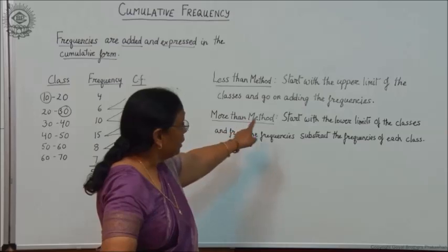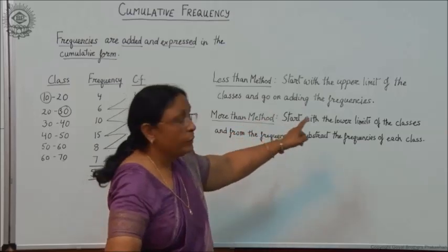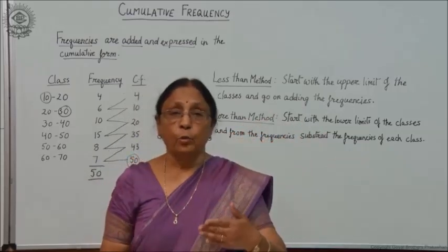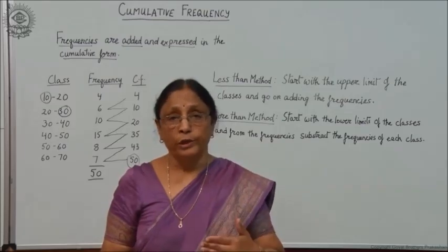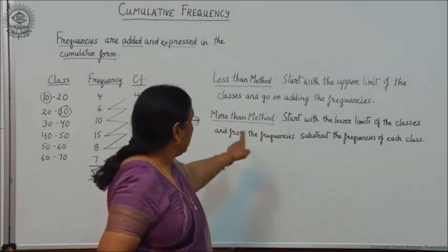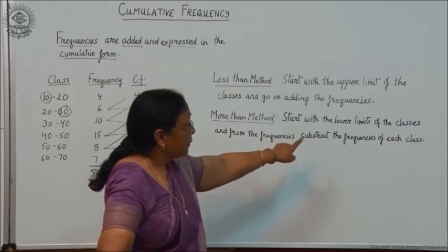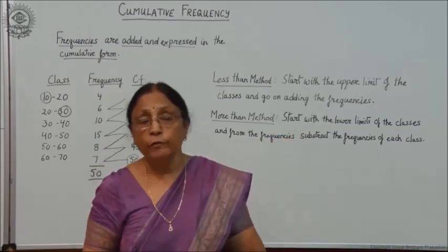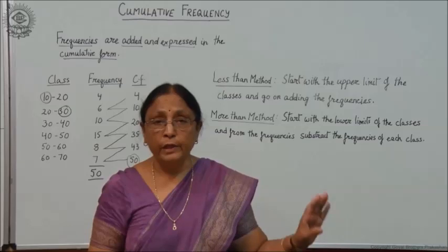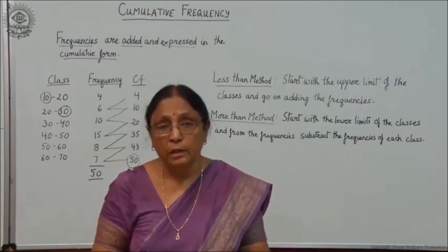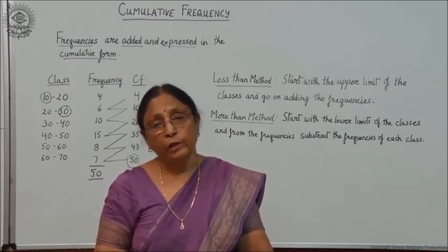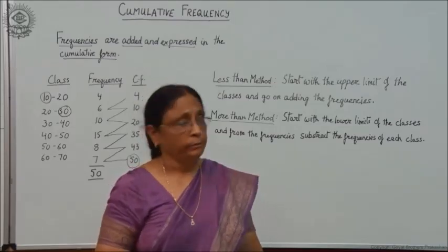In the more than method, we start with the lower limit, because we have to take what is more than the lower limit. In this form, the frequencies are subtracted from the frequencies of each class. This will be clear when we take an example, and then you will be able to understand how to calculate less than and more than.